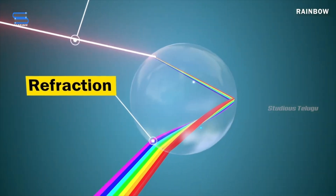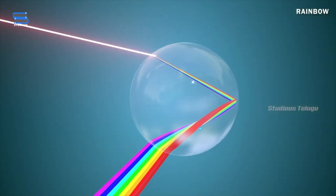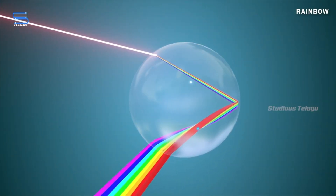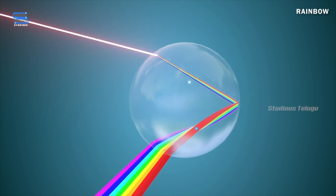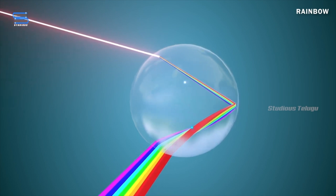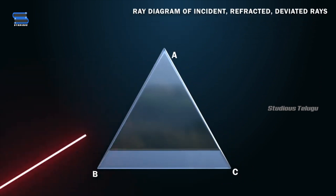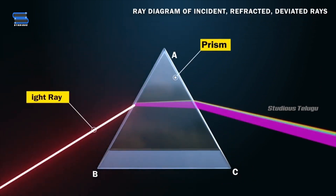This is why rainbows always appear as an arc. The angle of the rainbow is always 42 degrees from the sun.